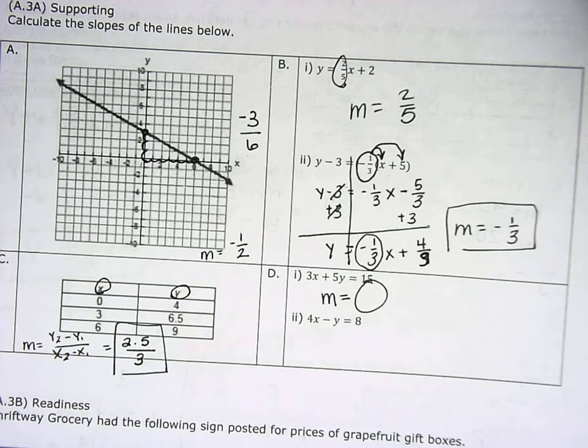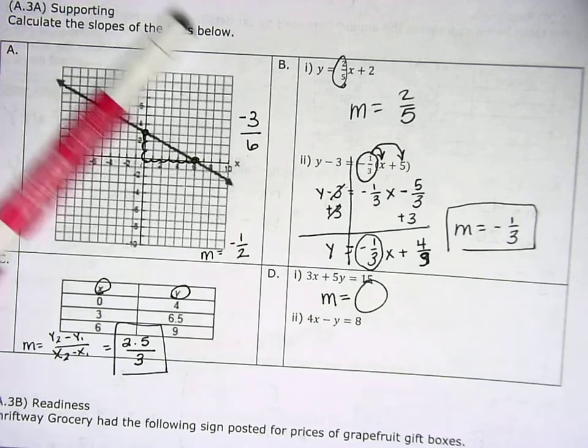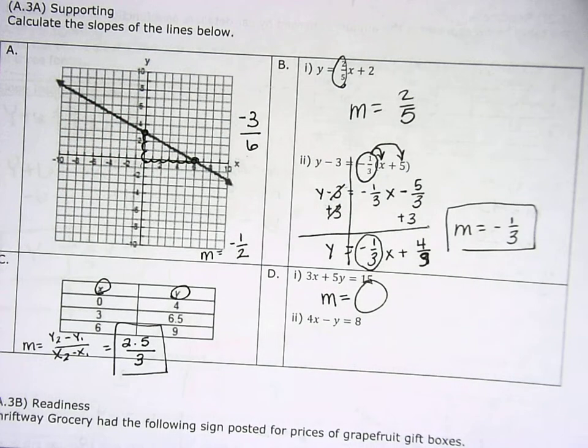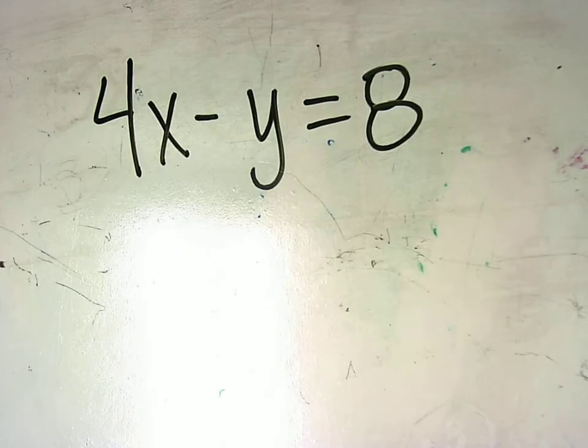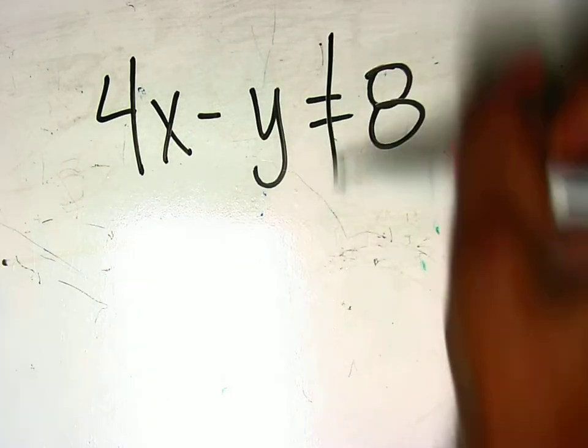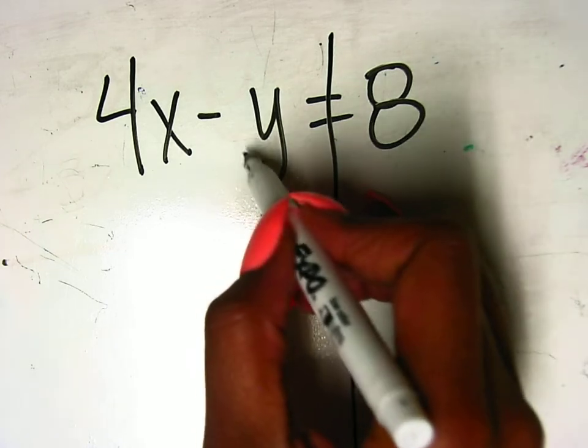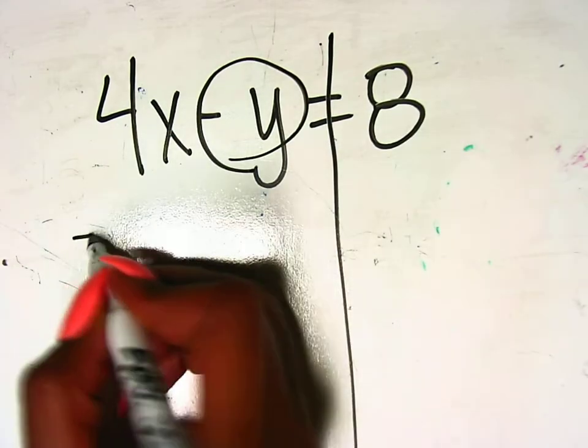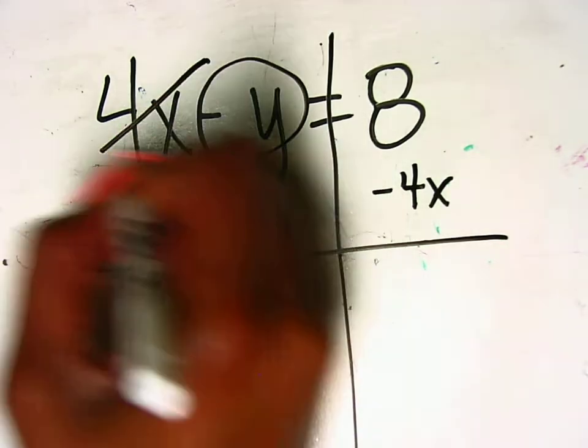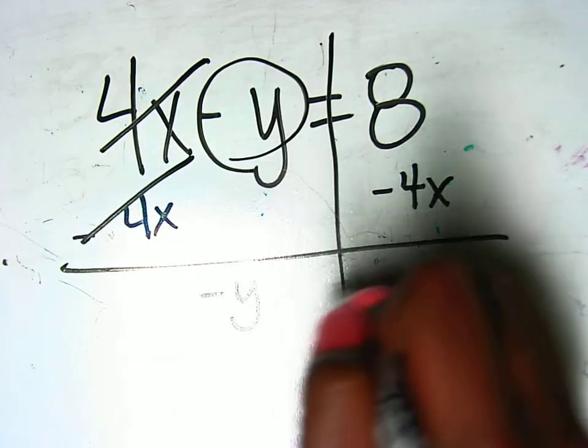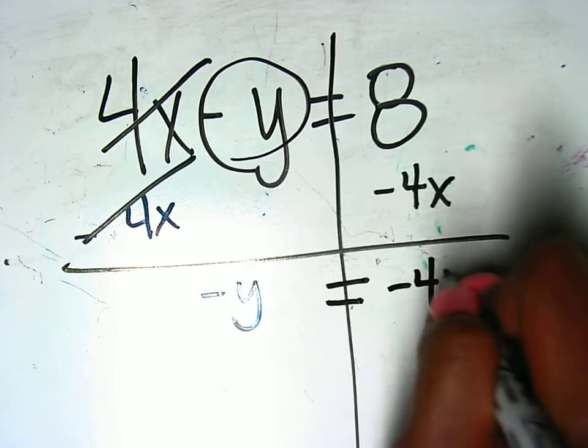it says 4x minus y is equal to 8. To figure out our slope for this one, we need to solve for y. So I'm going to draw my line. And to get this y term by itself, I have to get rid of this 4x. So I'm going to subtract 4x on both sides. These cancel. And I'm going to bring down my minus y is equal to, write my x term first.